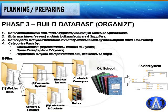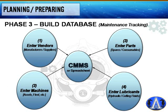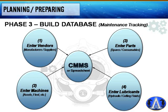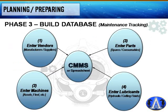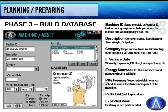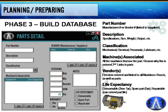For phase three, building a database, there are three ways: old-school composition notebooks, electronic folders, or the best method — a CMMS (Computerized Maintenance Management System). Always enter your parts suppliers and vendors first, because everything links around them. Then enter machines and assets and link them to the manufacturers and suppliers.